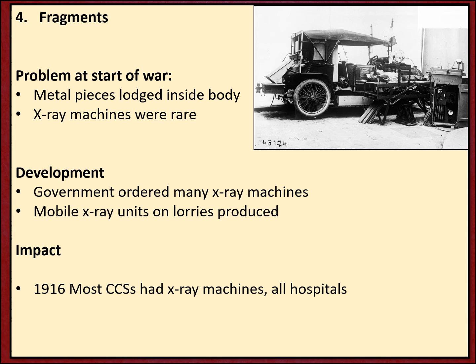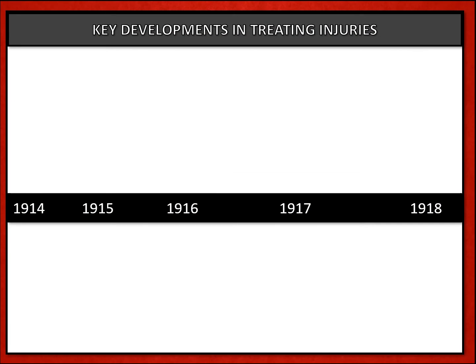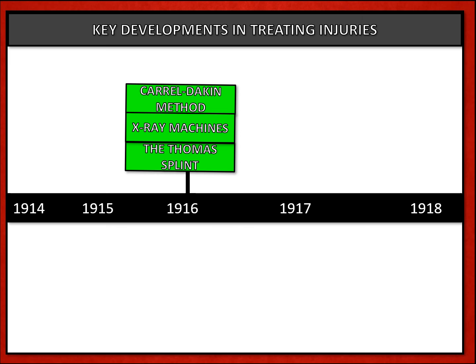If we piece together the key developments against the major battles of the war, 1916 - two years into the war - is a major breakthrough year. This is the year of the Carroll-Dakin method, when X-ray machines started to become widely available at casualty clearing stations, and we have the use of the Thomas splint. 1916 coincides with the Battle of the Somme, but the problem for soldiers was having access quickly enough to these life-saving techniques given the scale of injuries.